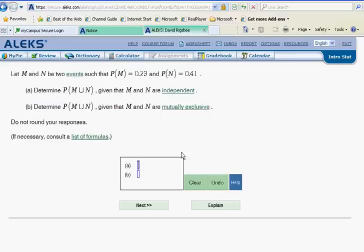So as we take a look at this, we say M and N are two events. The probability of M is 0.23, the probability of N is 0.41. We want to determine the probability of M or N, given that M and N are independent, and in part B, given that they are mutually exclusive.